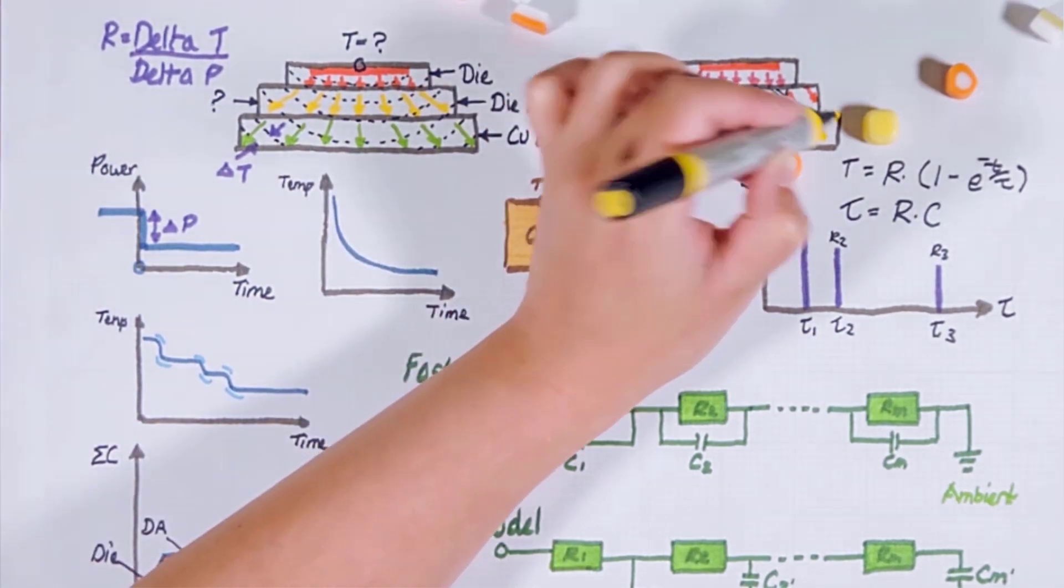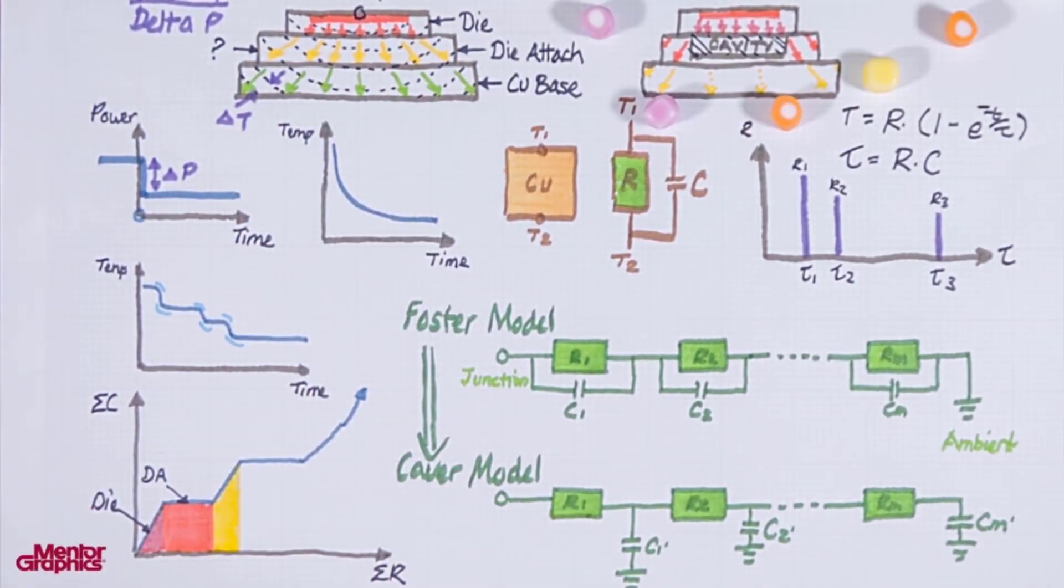The heat eventually goes into the less resistive copper base which is shown by this steep part of the curve.